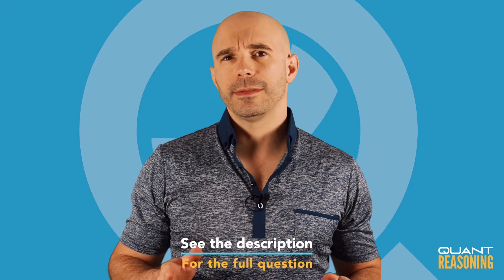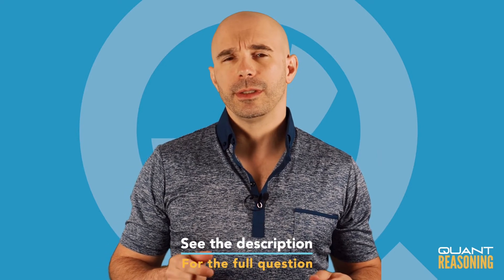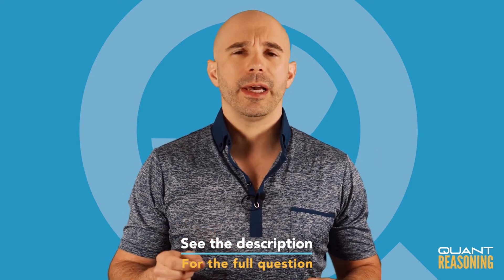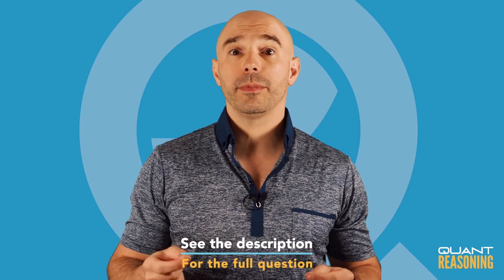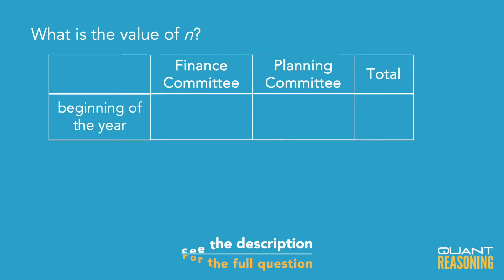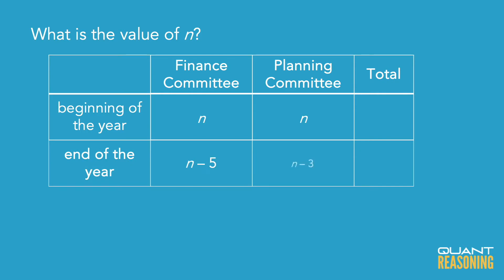In this data sufficiency question, the finance and planning committees each had n members. The finance committee lost 5 and the planning committee lost 3. So at the end of the year, the finance committee had n minus 5 and the planning committee had n minus 3.